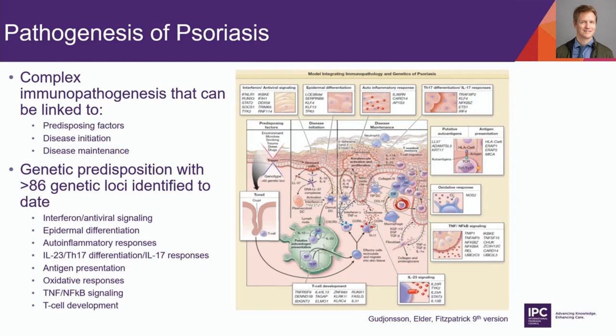In the skin, you get activation of plasmacytoid dendritic cells through cellular stress and activation of dermal dendritic cells homing into the skin and lymph node. Through IL-12 and IL-23 — critical key mechanisms in psoriasis pathogenesis — you get activation of Th1 and Th17 cells that home back into the skin. Once these cells enter the skin, they release pro-inflammatory mediators such as TNF and IL-17, activating keratinocytes and initiating a vicious cycle that maintains the inflammatory process.